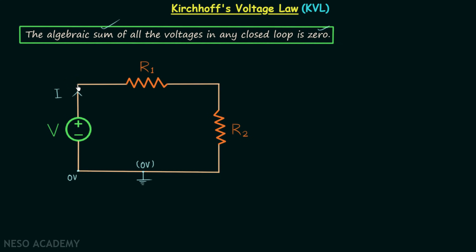This point is the low potential point. Let's say the potential here is equal to V prime — this is the high potential point. So the high potential V prime minus the low potential 0 volt equals the voltage V. Therefore V prime is equal to V, so the potential at this point is equal to V.